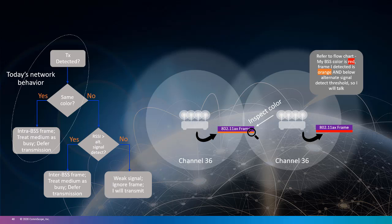If the color is different, the frame is considered an inter-BSS transmission from the overlapping BSS service set, and the listening radio treats the medium as busy only for the time it took to determine the color bit was different. Next, you ask if the RSSI signal is greater than the alternate signal detected. If yes, you treat the medium as busy and defer transmission. If no, the signal is weak and you can ignore the frame and start transmitting. Since both APs are on the same channel, this technology improves spatial reuse efficiency and performance.